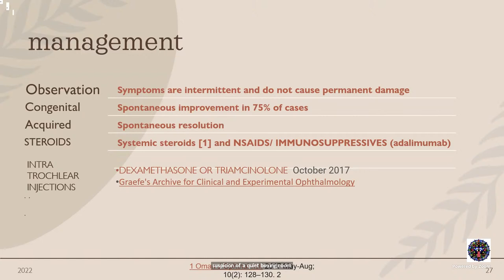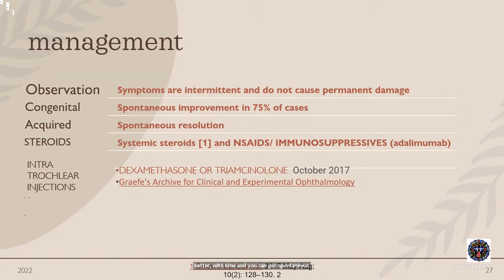Management: be conservative. Brown syndrome is not one to treat aggressively. Observe, observe, observe. Symptoms are intermittent and do not cause permanent damage. In congenital Brown syndrome, there is spontaneous improvement in 75% due to mesenchymal differentiation of the superior oblique tendon-trochlea complex improving with time. In acquired cases, when inflammation resolves there is spontaneous resolution. You can give steroids — systemic, combined with NSAIDs. Long-term inflammation may require immunosuppressives like methotrexate.